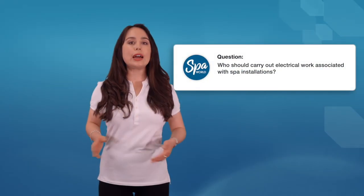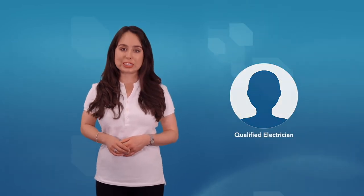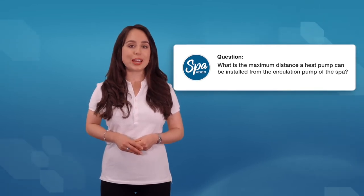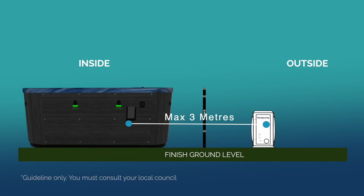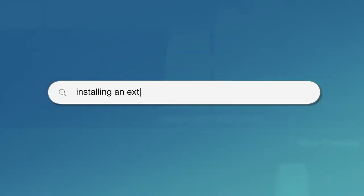We suggest that you email compliance at spaworld.com.au who should carry out electrical work associated with spa installations. All electrical work must be carried out by a qualified electrician. What is the maximum distance a heat pump can be installed from the circulation pump of the spa? We recommend that the distance between the heat pump and circulation pump should be no greater than 3 metres. The height distance between the two pumps should not be any greater than 1 metre. And to learn more, we recommend that you read this article.